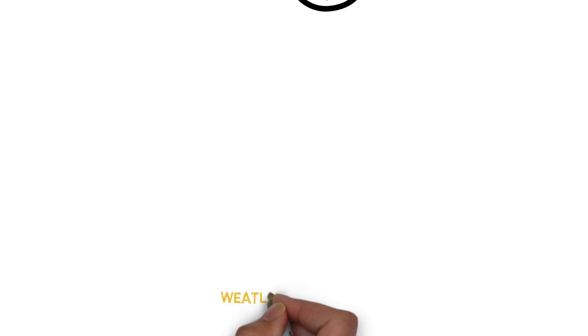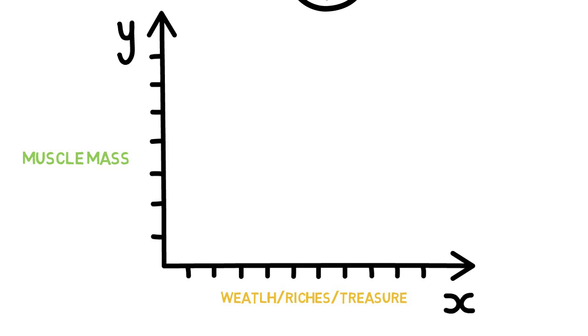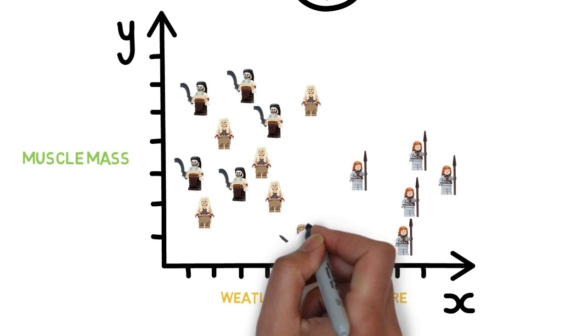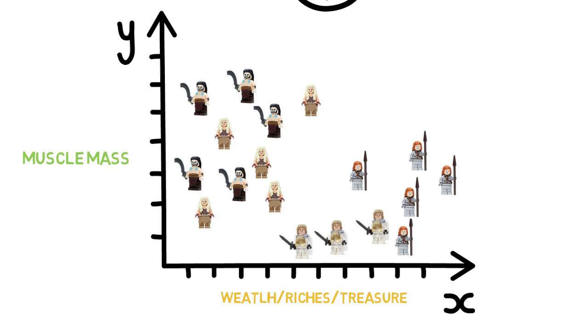For the bulk of the Dothraki, let's assume they have a higher muscle mass as they are nomadic warriors. People from Westeros, however, let's assume they are a wealthier population and urban dwellers, so that the average muscle mass would be significantly lower than that of a Dothraki.